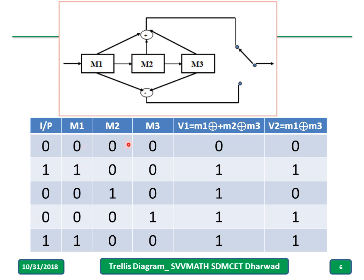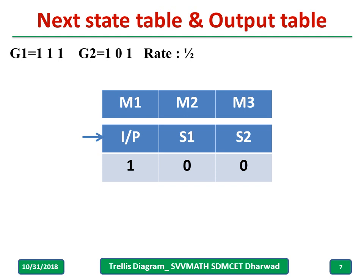For all combinations — say initially the state is 00 and input is 0, then input is 1, then 1 0, input is 0, and so on — when I XOR all three bits I get v1, and when I XOR the first and last bit I get v2. Before going to the next state table, note that m1 is the input and m2, m3 represent the states S1 and S2 from the next slide onwards.